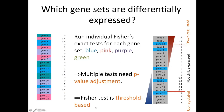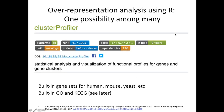One limitation of the Fisher test is that it's threshold-based — each gene is classified as either differentially expressed or not, which doesn't take into consideration the magnitude of the fold change. For example, one gene might be much more downregulated than another, but both are treated equally. There is another method — gene set enrichment analysis — that takes into account the magnitude of the fold change.